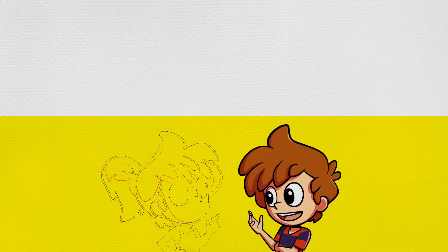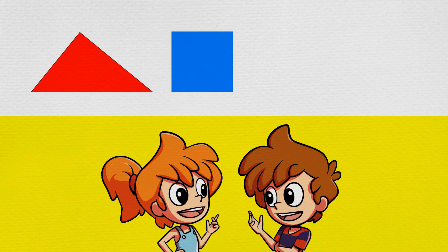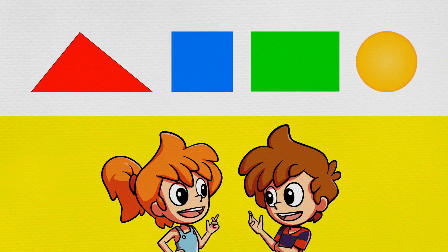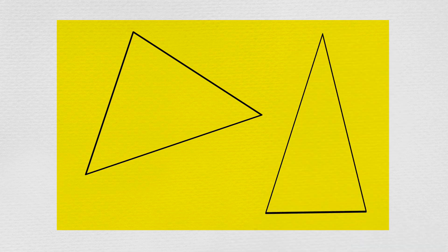One of Max and Min's favourite games is making pictures using four different types of shapes: triangles, squares, rectangles and circles. First, they draw and cut out the shapes in different sizes. Today, Min is cutting out the triangles and squares.